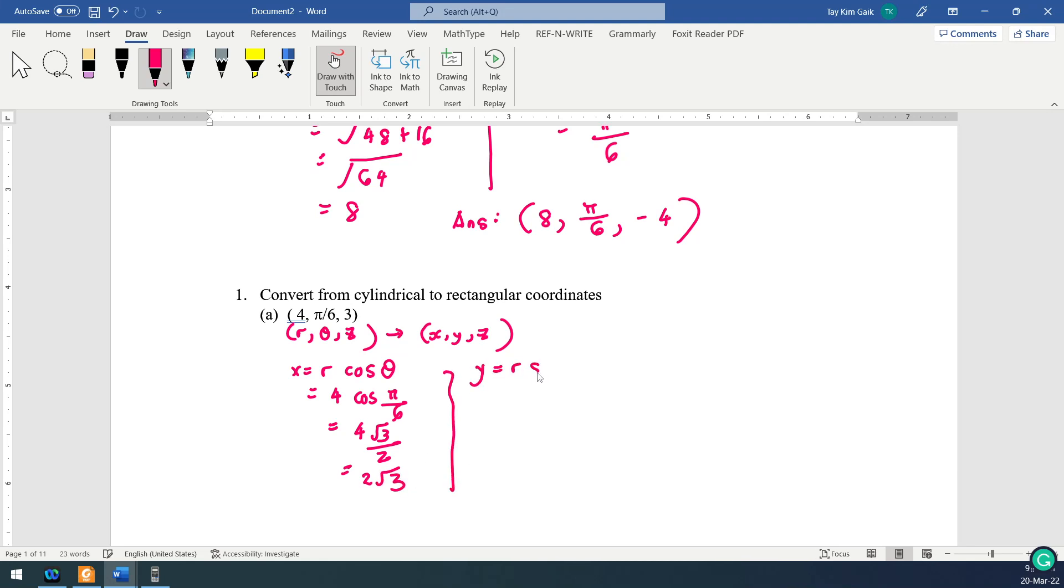So y is r sin theta. R is 4, and then sin pi over 6 is half, so you get 2. Z, same. Z maintained. So z is 3. So the answer.